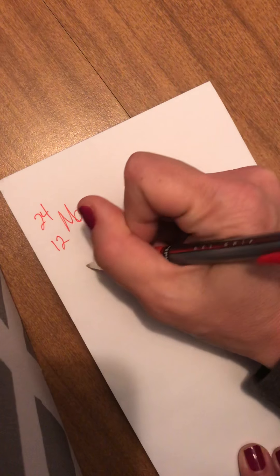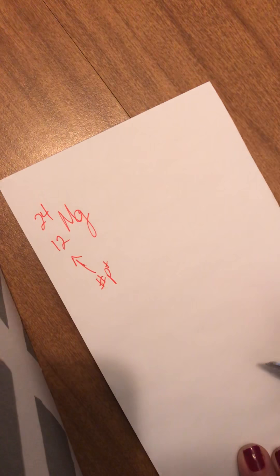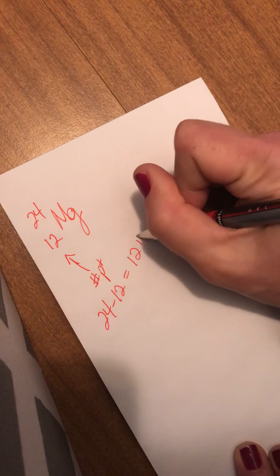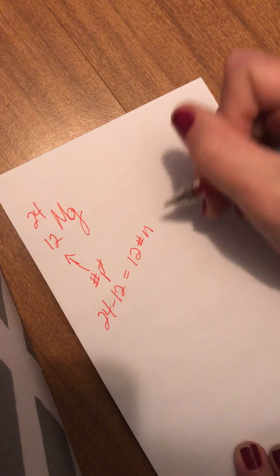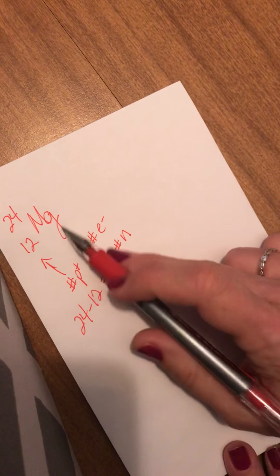What that tells us is the 12 is telling us the number of protons is 12. 24 minus 12 equals 12, and that's the number of neutrons. And then the number of protons has to be the same as the number of electrons because I have an atom.